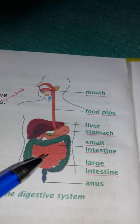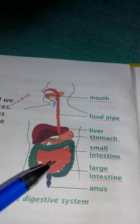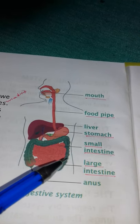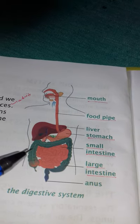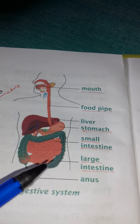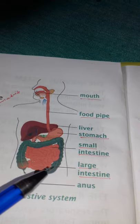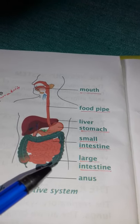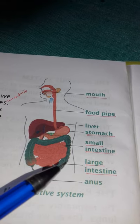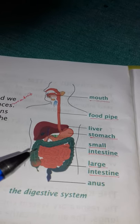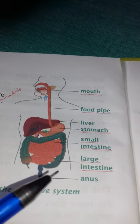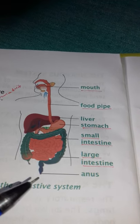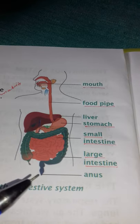The undigested food comes to the large intestine. In the large intestine, whatever water is present in the undigested food is absorbed by the large intestine. The remaining undigested food then comes out from our body through the anus as waste material.